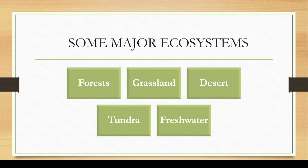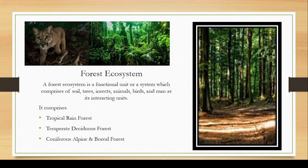Here we have some major ecosystems that were discussed in the previous video. If you haven't checked that video, we will share the link in the description — do check it out there. The major ecosystems are forest, grassland, desert, tundra, and freshwater. Today in this video we will discuss the forest ecosystem along with their categorization and their characteristics.